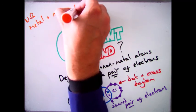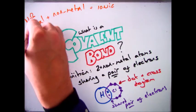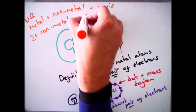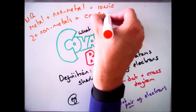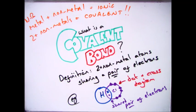So in an exam if you're trying to figure out whether it's ionic or covalent bonding, look at the elements involved. If it's a metal and a nonmetal, it's ionic. If it's two or more nonmetals, it's covalent.